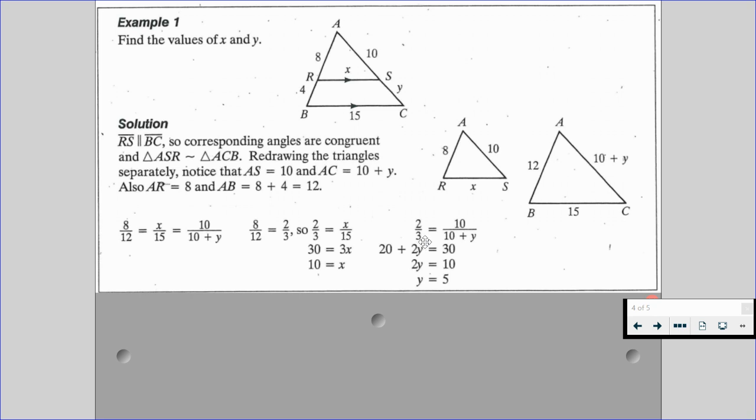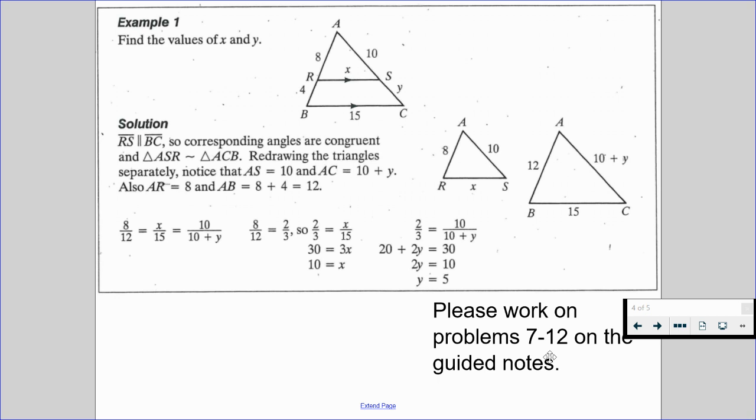Likewise, we know that 2 thirds is going to be equal to 10 over 10 plus Y. As we multiply 2 with the quantity of 10 plus Y, we get 20 plus 2Y, and 3 times 10 gives us 30. Therefore, Y is going to be equal to 5. And with this, please work on problems 7 through 12 on the Guided Notes, and resume when you're ready for one more example.